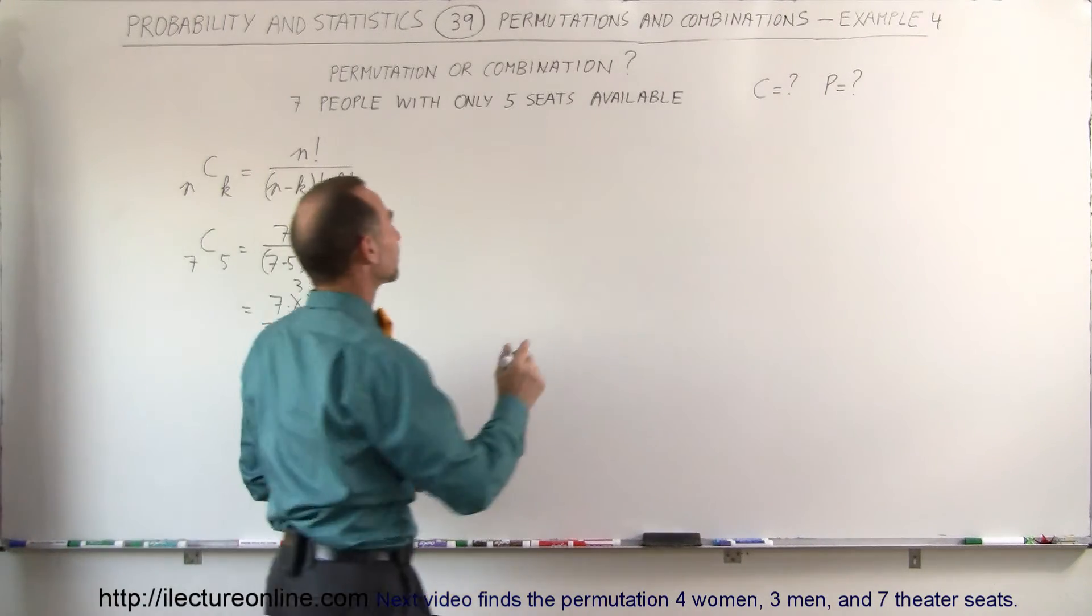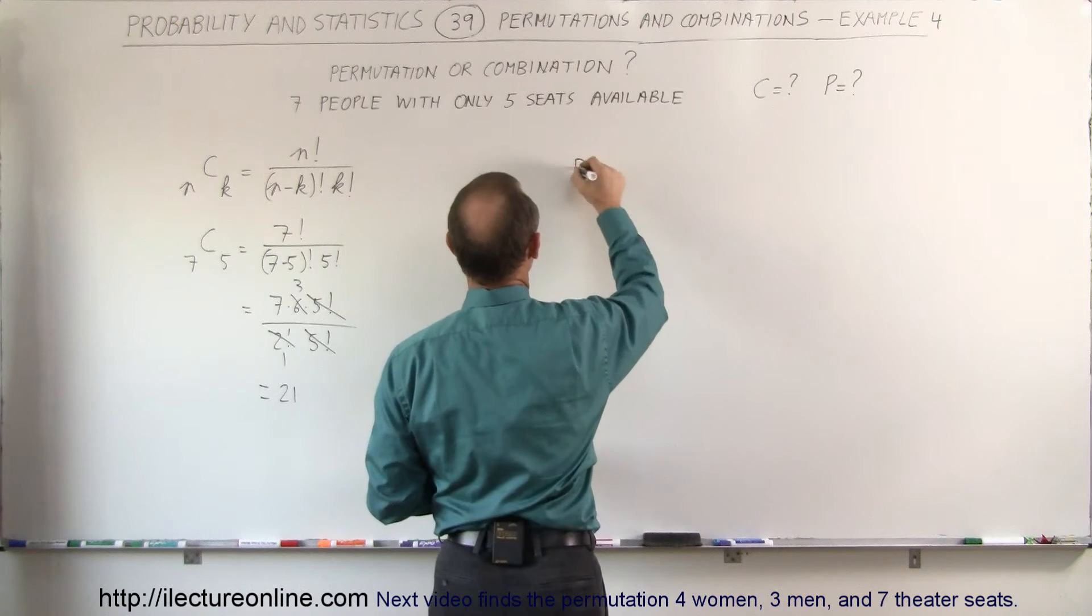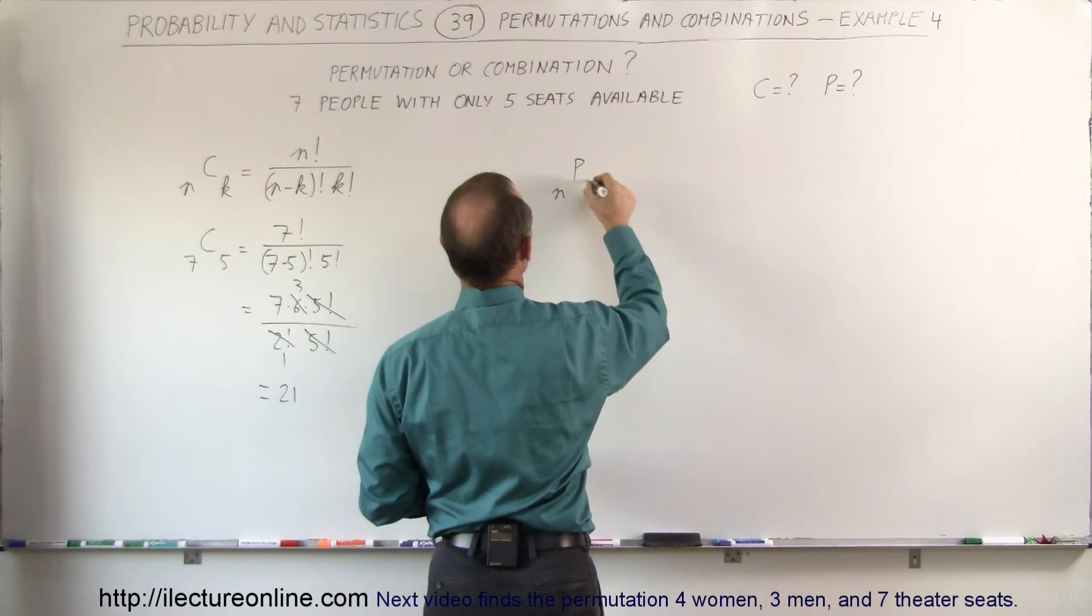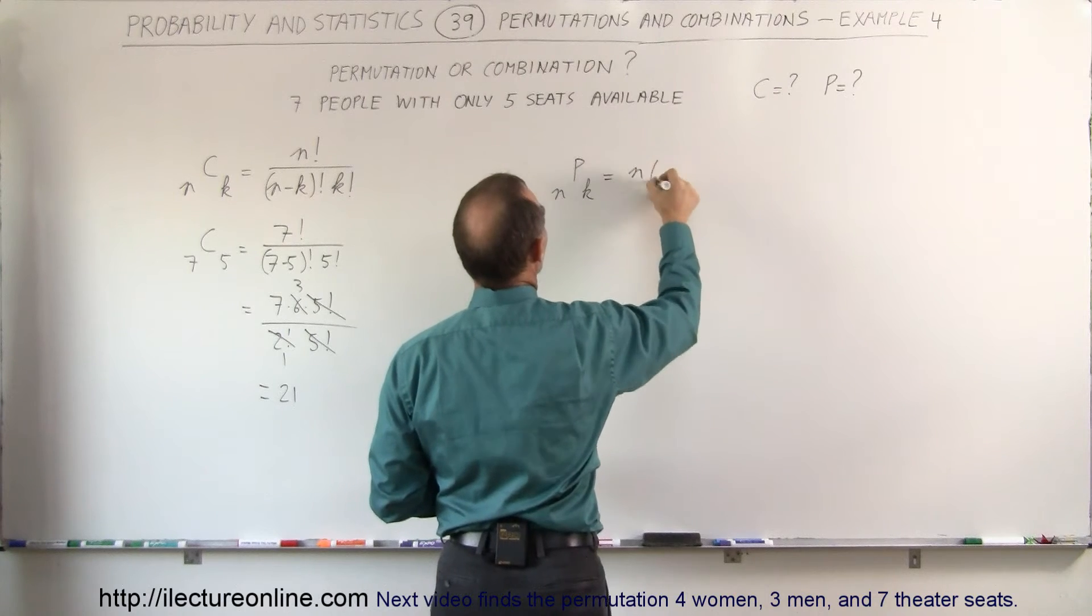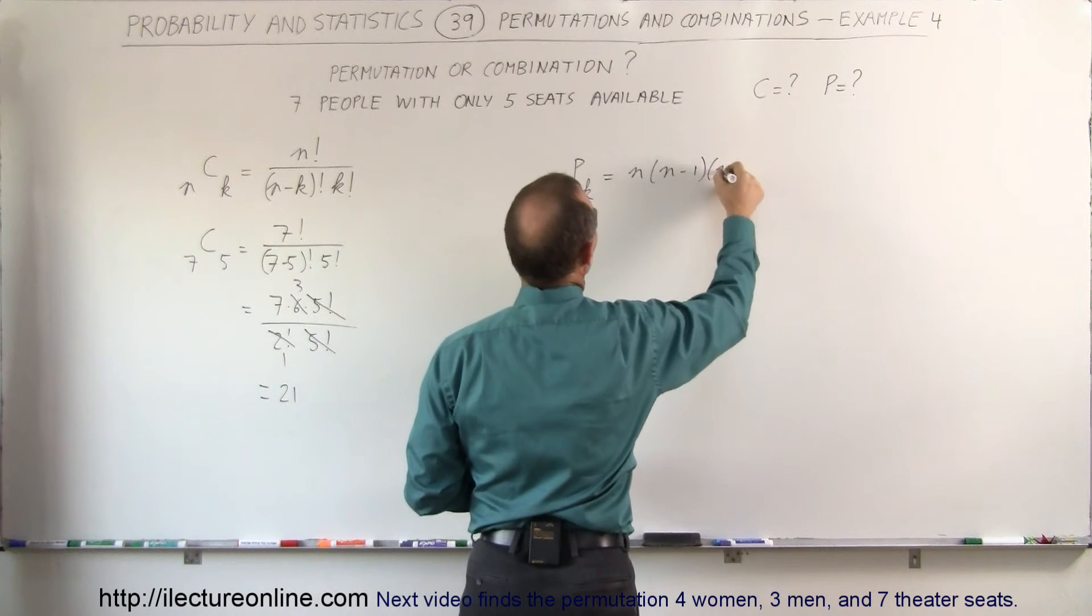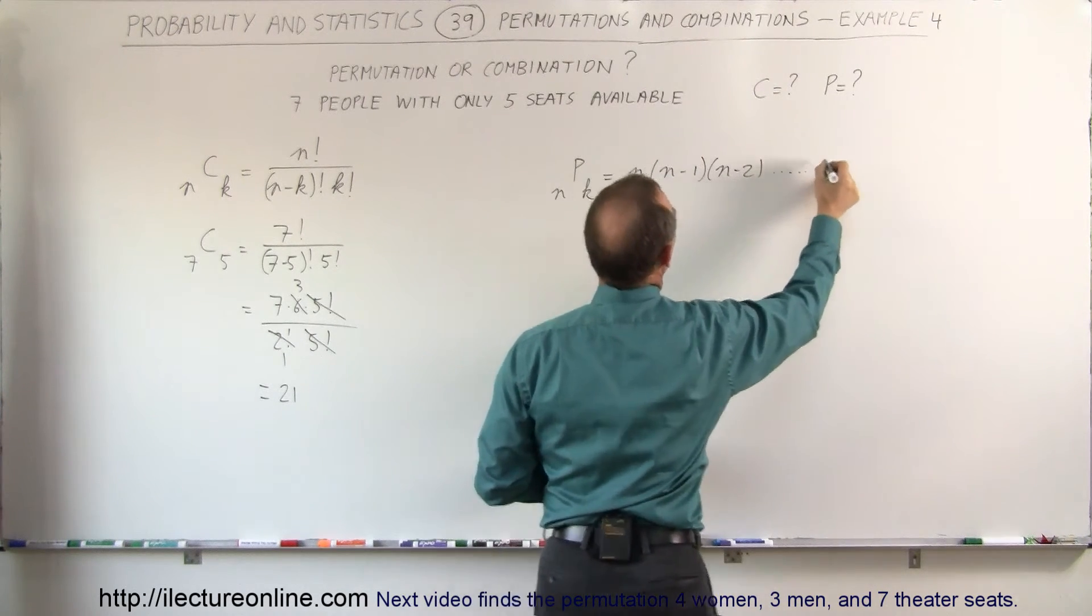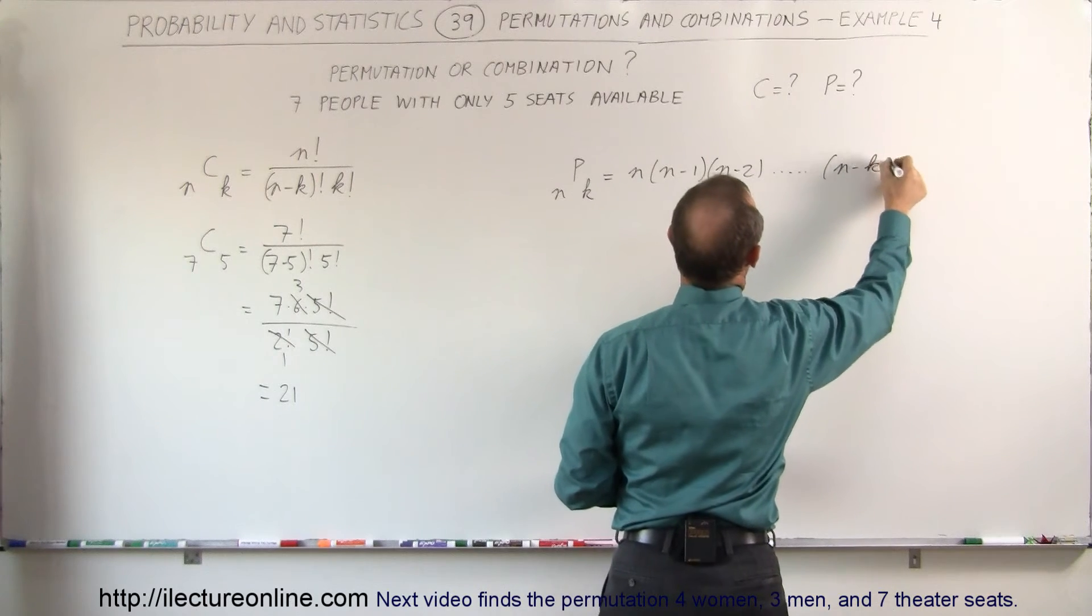Number of permutations: the number of permutations when you have n people and we have k number seats is equal to n times n minus 1 times n minus 2 all the way down to n minus k plus 1.